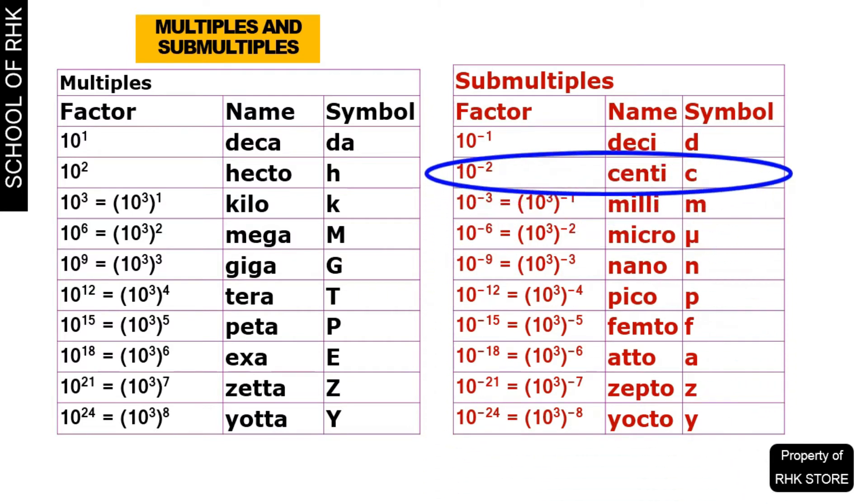For example, a centimeter is a submultiple and a kilometer is a multiple of a meter. The SI multiples and submultiples have three elements involved. The first element is factor, the second element is name, and the third element is symbol.